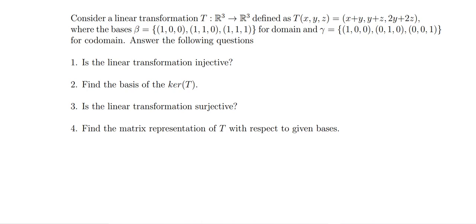We have given a linear transformation T from R³ to R³, defined as T(x, y, z) = (x+y, y+z, 2y+2z). The basis β for the domain equals {(1,0,0), (1,1,0), (1,1,1)}, and the basis γ for the codomain is {(1,0,0), (0,1,0), (0,0,1)}, that is the standard ordered basis.